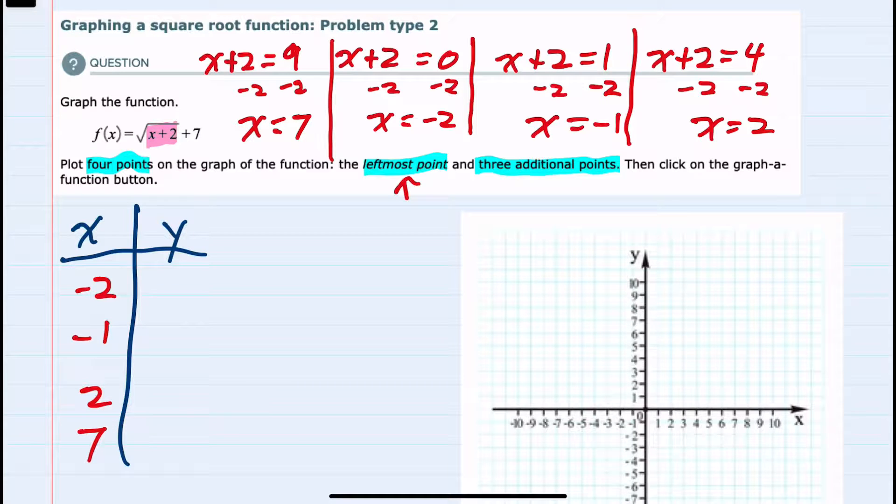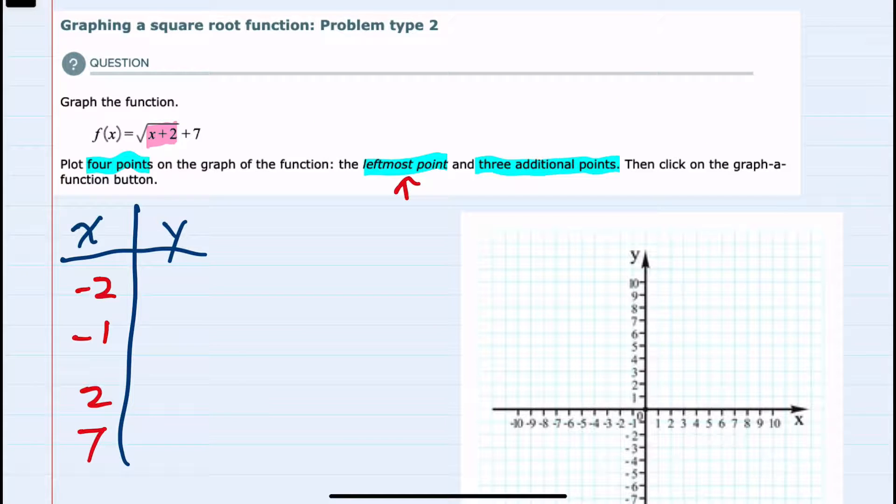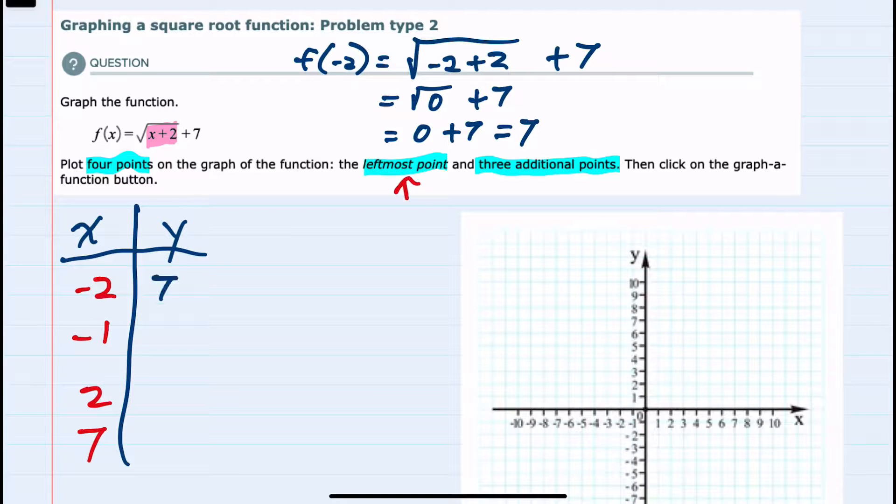So now that I've identified my x values, I can substitute each one into f(x) to find the corresponding y values. Starting with negative 2, f of negative 2 would be the square root of negative 2 plus 2 plus 7. And inside the radical, this would be a 0. And since the square root of 0 is 0, then our y value would just be 7. So we have the coordinate negative 2, 7.